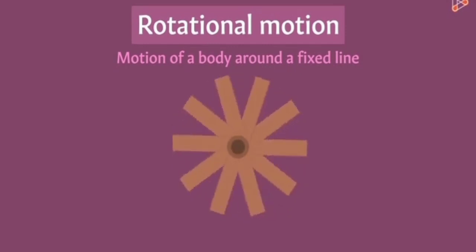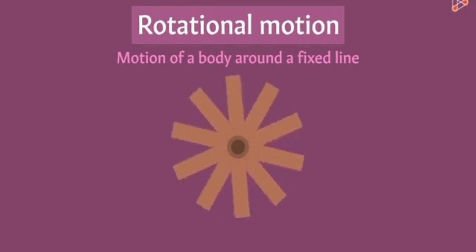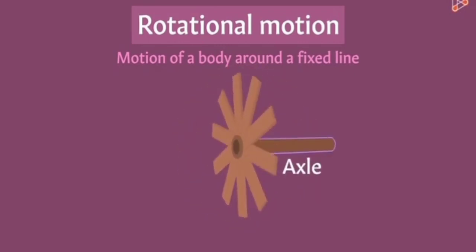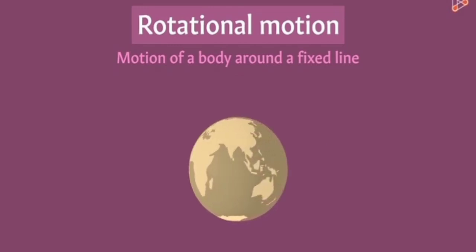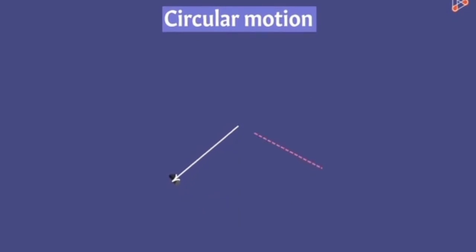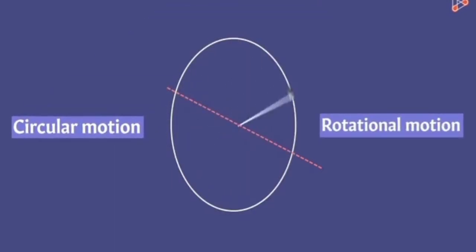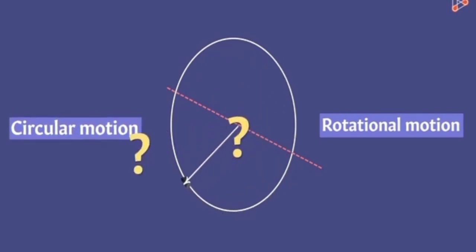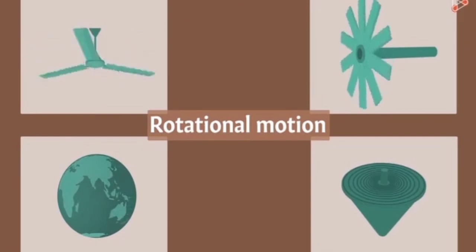Examples of rotational motion include a rotating wheel — its axis of rotation lies on its axle — and the Earth spinning around its own axis, and a spinning top. Going back to the whirled stone: we said it was performing circular motion, but if we take the rope as the axis of rotation, could we also call it rotational motion? So what exactly is the difference between circular and rotational motion?